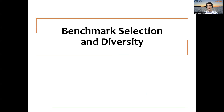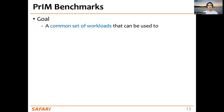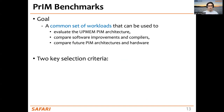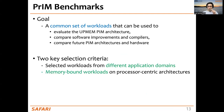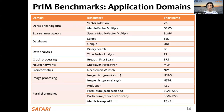We will start with benchmark selection and the diversity of the benchmarks we selected to create the PIM benchmark suite. The goal is to have a common set of workloads to evaluate the UPMEM PIM architecture, compare software improvements and compilers, and compare future PIM architectures and hardware. We have two main selection criteria: workloads from different application domains, and memory-bound workloads on processor-centric architectures. In total, there are 14 different workloads and 16 benchmarks, spanning dense linear algebra, sparse linear algebra, databases, graph processing, neural networks, bioinformatics, image processing, and parallel primitives like reduction and prefix sum.